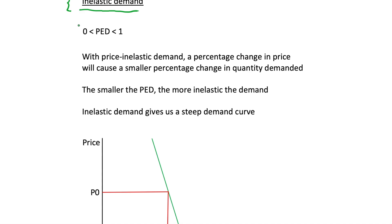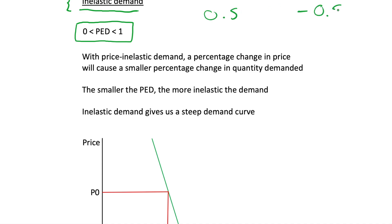This video focuses on inelastic demand. Our definition of inelastic demand is a price elasticity lying between 0 and 1. Remember that we're only focusing on the positive or absolute value of this price elasticity, so inelastic demand could be a price elasticity of 0.5, or equally a value of minus 0.5 — anything between negative 1 and positive 1.